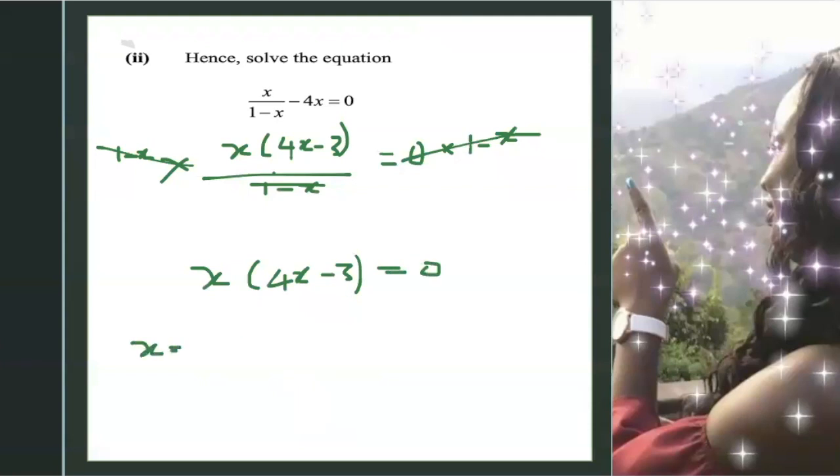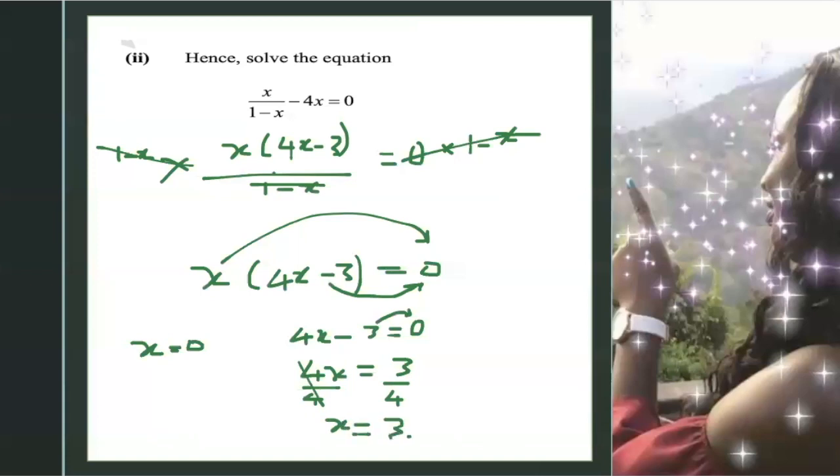So we have x equals 0, and then we have 4x minus 3 equals 0. So we separate it. x equals 0. Then 4x minus 3 equals 0. Now we're trying to make x be by itself. So we carry the minus 3 over. So we have 4x equals positive 3. Then we divide both sides by 4. So this cancels. So x equals 3 over 4. So the solution is x equals 0 and x equals 3 over 4.